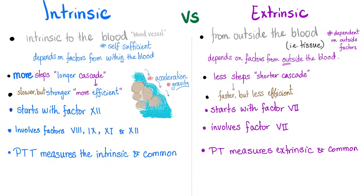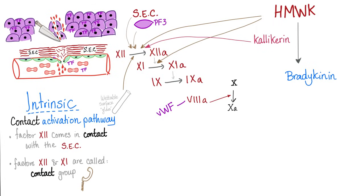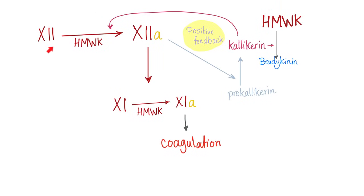The intrinsic coagulation pathway is longer and starts with factor 12. To get factor 12 activated, you need four things: subendothelial collagen (because the endothelium has been injured), platelet factor 3, high molecular weight kininogen, and calicrin. After 12 is active: 11, then 9 and 8 — that's the contact group. Factor 12 will do two things: activate factor 11 (intrinsic pathway to make fibrin), and activate the conversion of pre-calicrin into calicrin — a positive feedback loop.